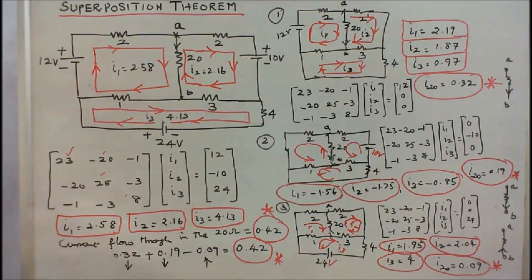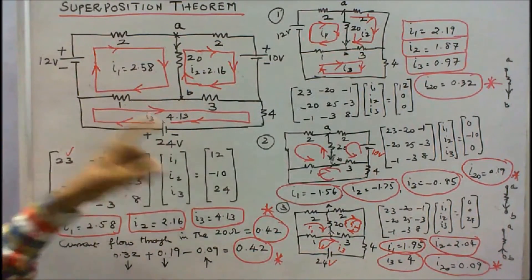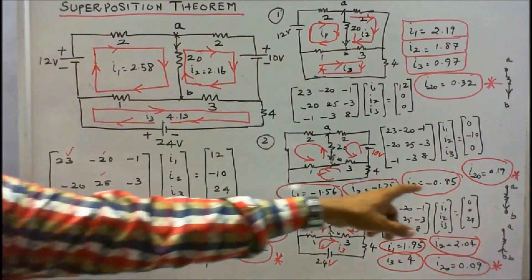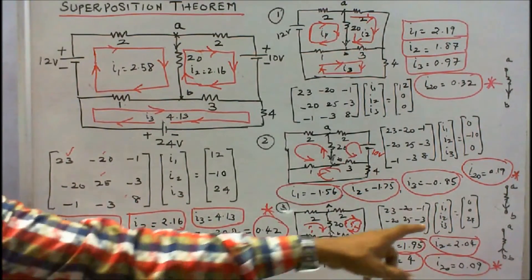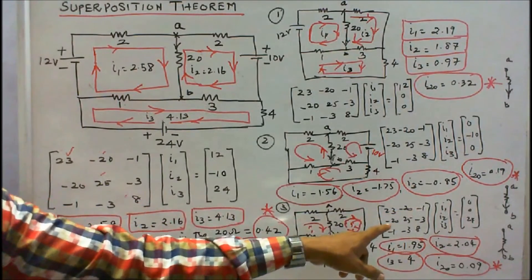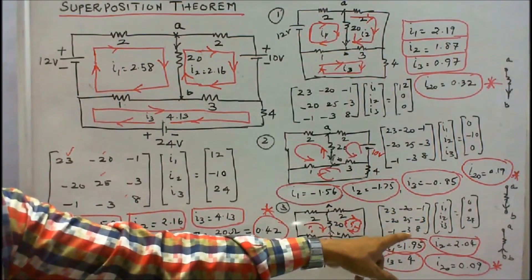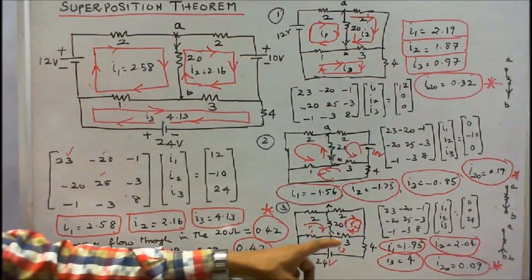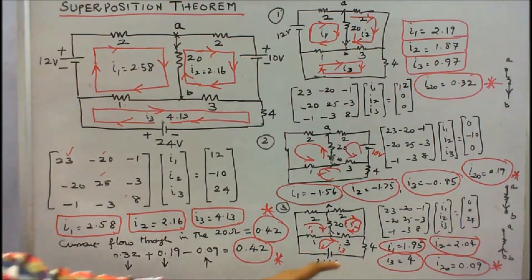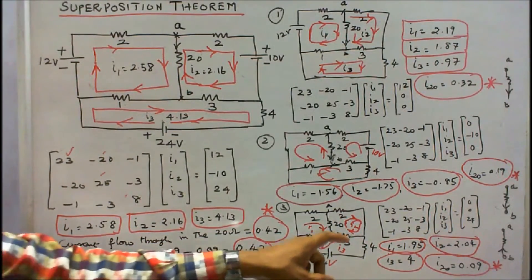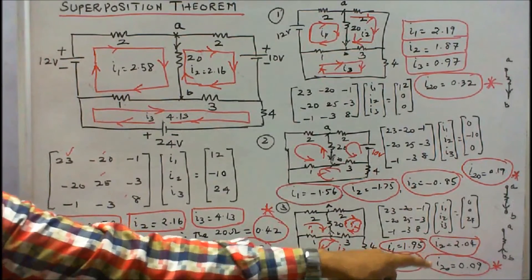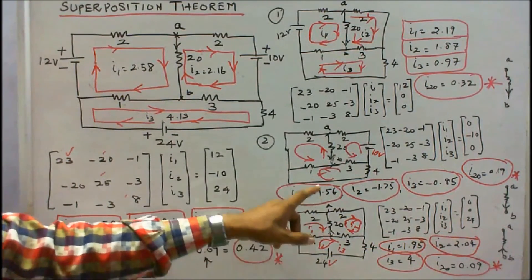In the third step, I deactivate 12V and 10V and activate only 24V. So V1 = 0, V2 = 0, V3 = 24V. The matrix is [23, −20, −1; −20, 25, −3; −1, −3, 8] with right-hand side [0, 0, 24]. Solving gives I1 = 1.95, I2 = 2.04, I3 = 4.0. The current through the 20-ohm resistor is I2 − I1 = 0.09 A, directed toward junction A.